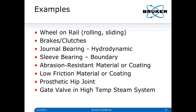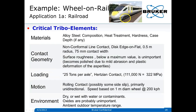Here is the list of examples. This is example one — wheel on rail — and I have one A and one B. The first one is a railroad wheel. I want to define the five areas — materials, contact geometry, loading, motion, and environment — and ask what is important in each of these tribological elements.